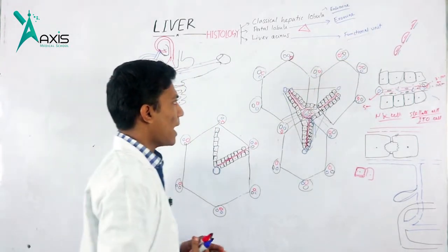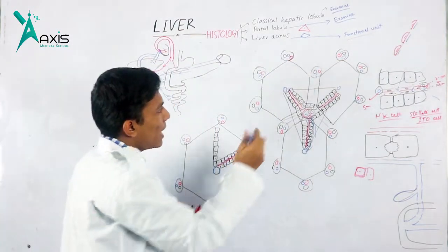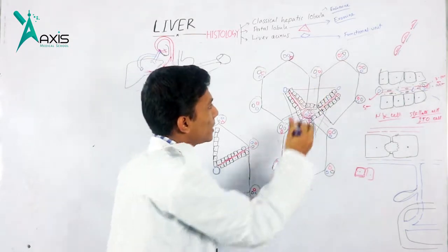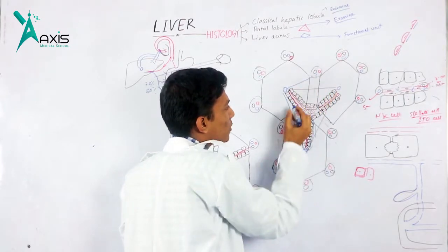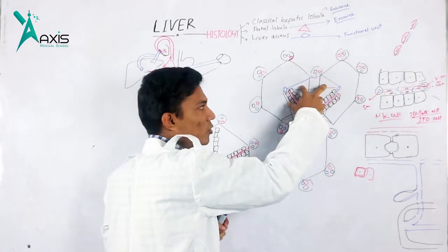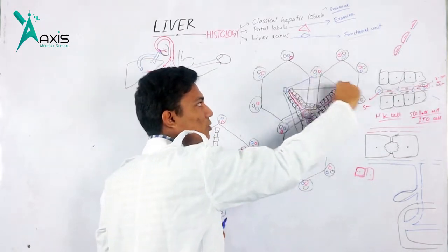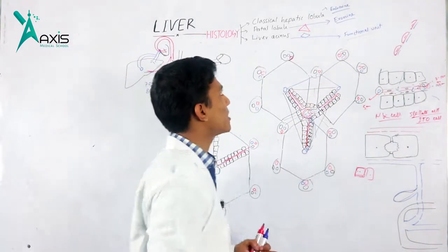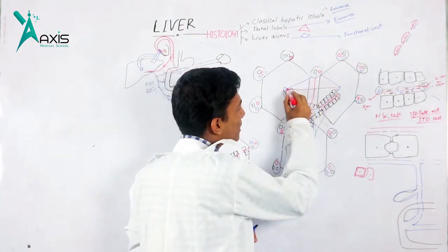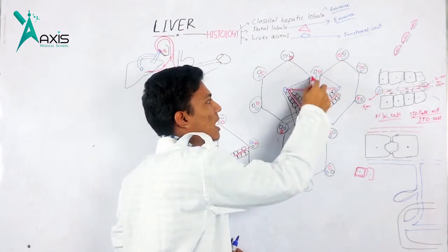Why is it called the functional unit? The liver acinus has a diamond shape. It is formed from two adjacent classical hepatic lobules. The two classical hepatic lobules are positioned between two portal triads and two central veins. The diamond shape has two axes — a short axis and a long axis — with the portal triads and central veins at opposite poles.